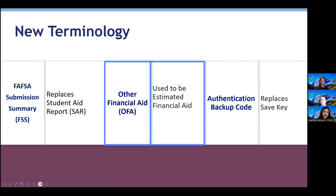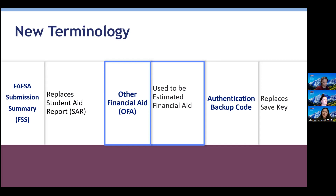The FAFSA Submission Summary replaces the Student Aid Reports — which used to be the SAR. This document provides a summary of the data input on the FAFSA form. Students will not receive their FAFSA submission summary until the end of January. They will receive their SAI and their Pell eligibility, but not the submission summary until the end of January. 'Other financial aid' used to be called 'estimated financial aid.' And the authentication backup code replaces the safe key.